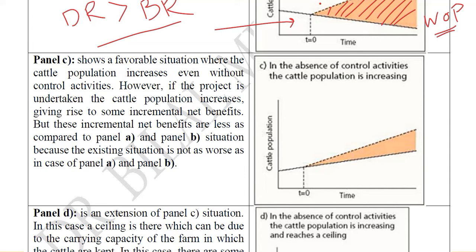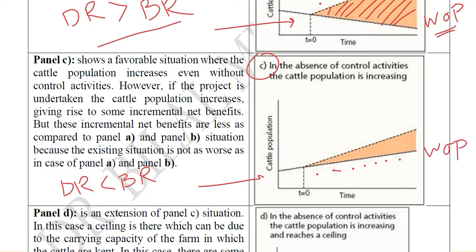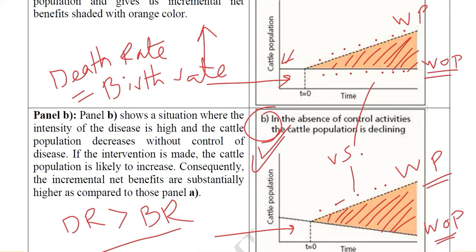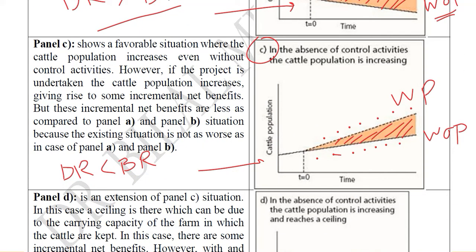In Panel C, the death rate is less than the birth rate, so the without-project population curve is already rising. If we undertake the disease control project, the population increases further as shown by the dotted line. The incremental net benefit — the difference between the two — is smaller than in Panels A or B, but it is still a positive region, indicating we have saved some cattle lives.